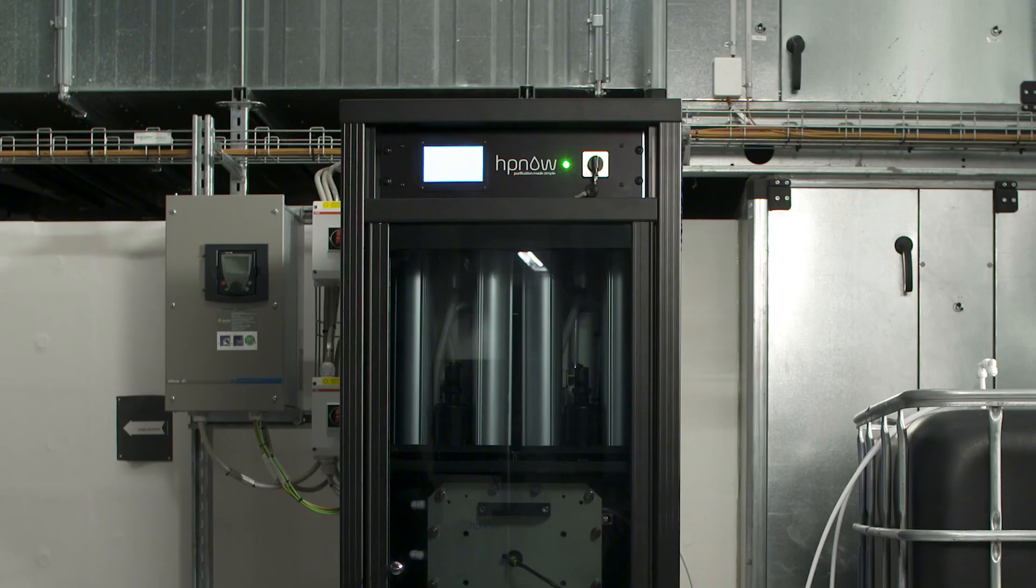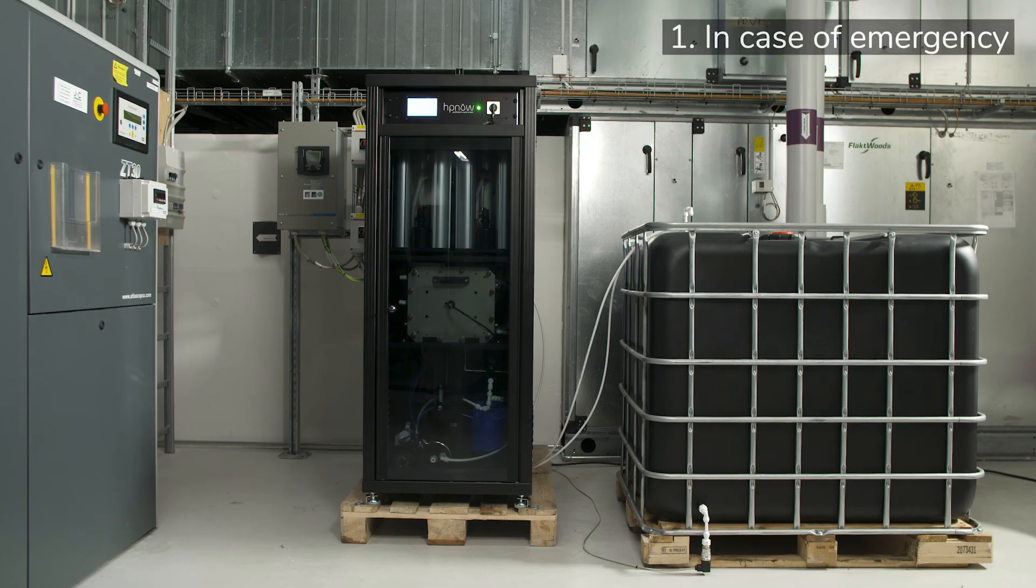The on-off switch on the control panel should only be used in two cases. 1. In case of emergency, flip the switch immediately off.